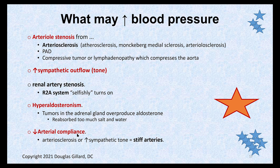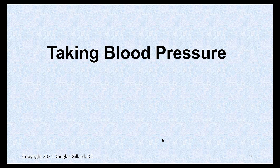Hyperaldosteronism — excess aldosterone causes reabsorption of salt and water, raising blood pressure. Also, decreased arterial compliance: the ascending aorta normally stretches when blood is ejected, dissipating the blast of blood and decreasing blood pressure. If it's stiff — from old age or arterial sclerosis — there's nothing to absorb that energy and hypertension results.